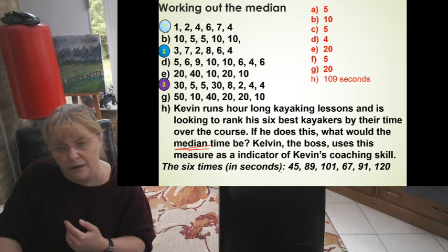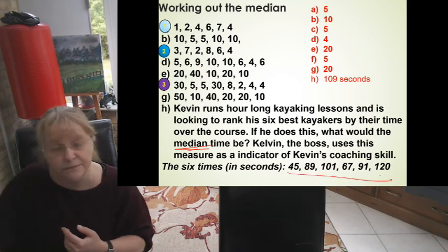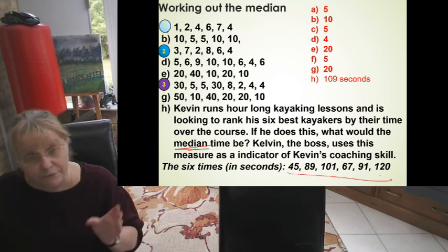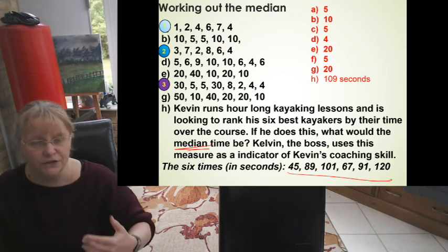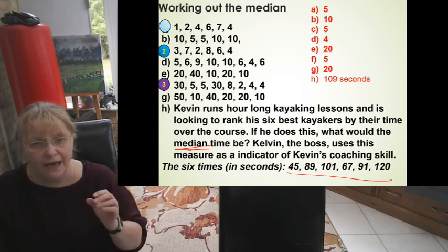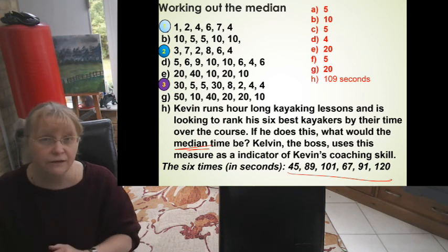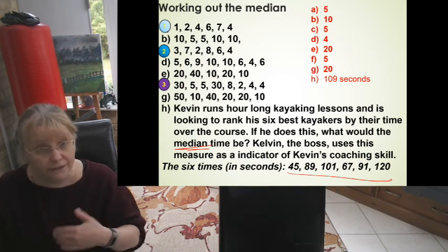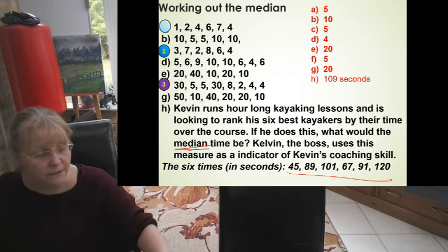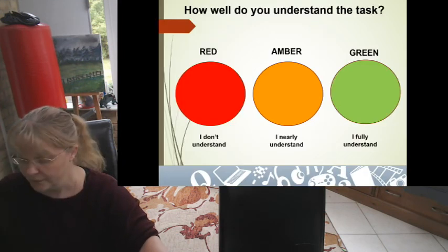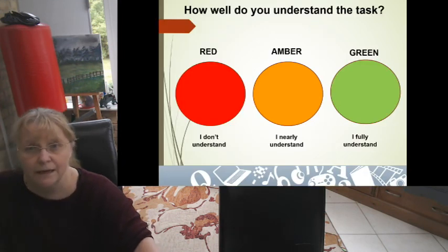It's just he wants to find out the median time, and there's the numbers. So have a quick read through the question, make sure you haven't missed the information. And what I would do, especially on an exam paper, is underline what is relevant to me. Then it makes it easier to work out the answer. So that's median, red, amber or green.